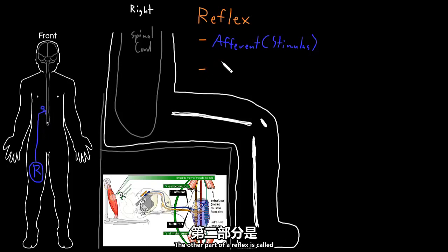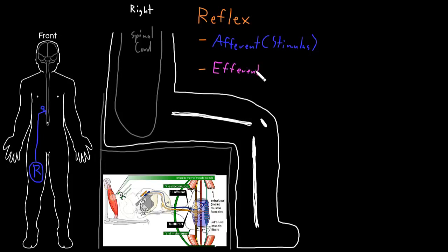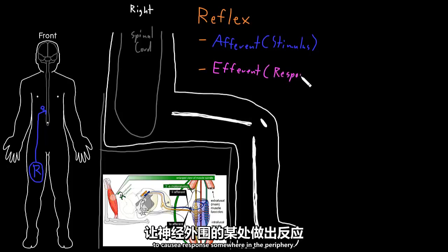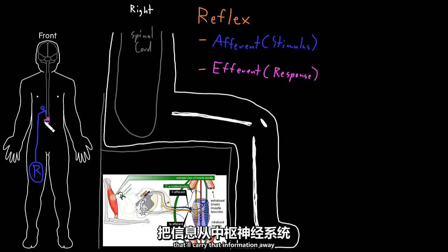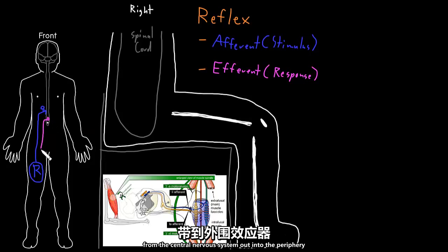The other part of a reflex is called the efferent part of the reflex, which carries information away from the central nervous system to cause a response somewhere in the periphery. There will be some sort of neuron that carries that information away from the central nervous system out into the periphery to cause some sort of response.